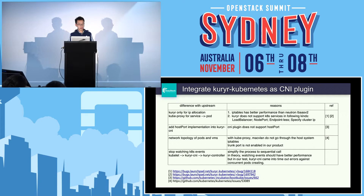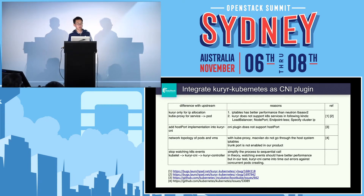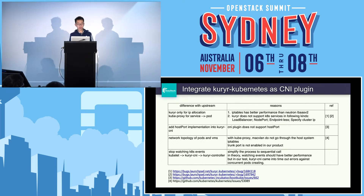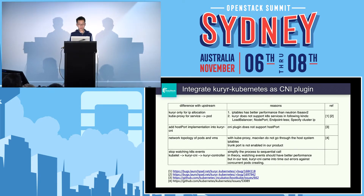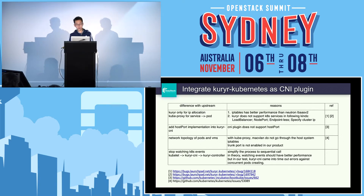The next change is we added host port implementation into the Kuryr CNI to resolve the issue that host port does not work when using a CNI plugin. Another change is we simplified the process to a sequential call from Kubelet to CNI to Kuryr controller. In theory, the upstream process uses event watching and should have better performance, but in our testing we consistently encountered timeout errors.